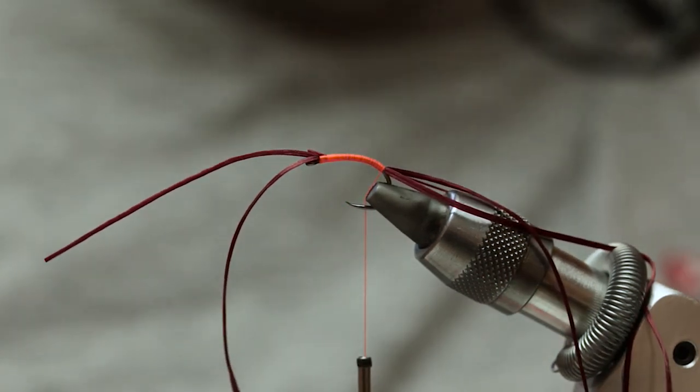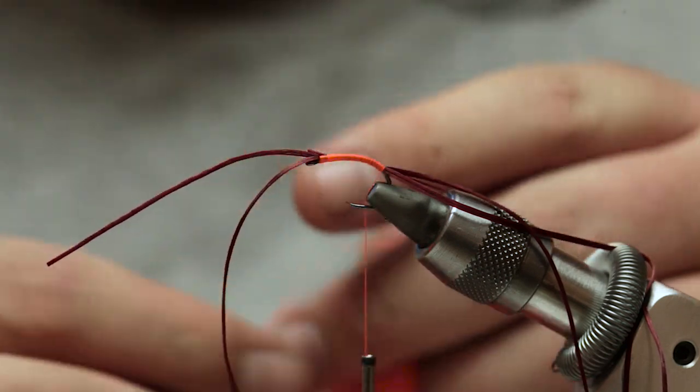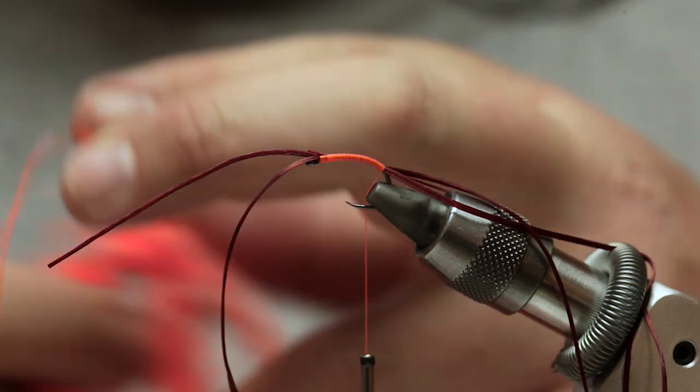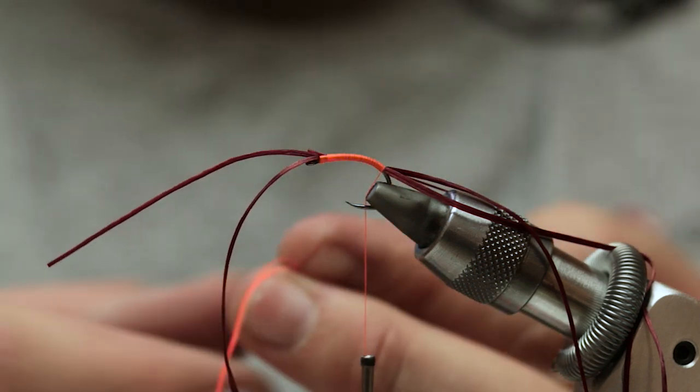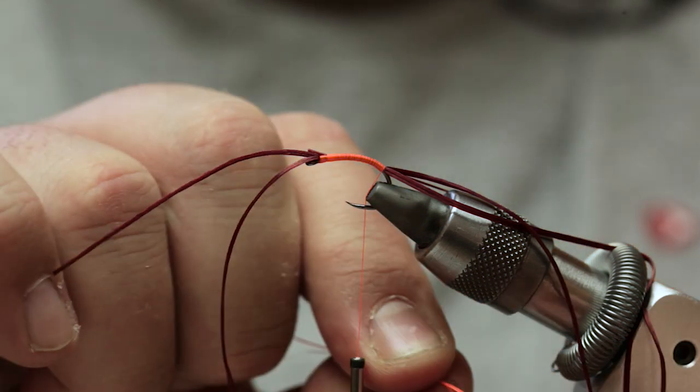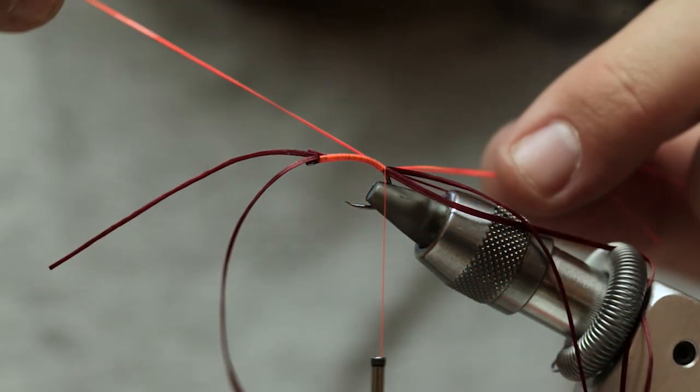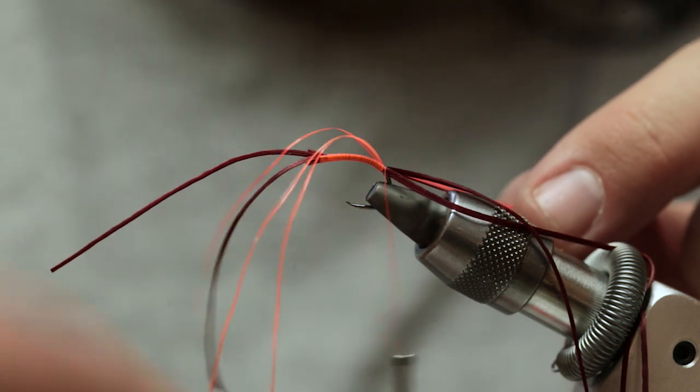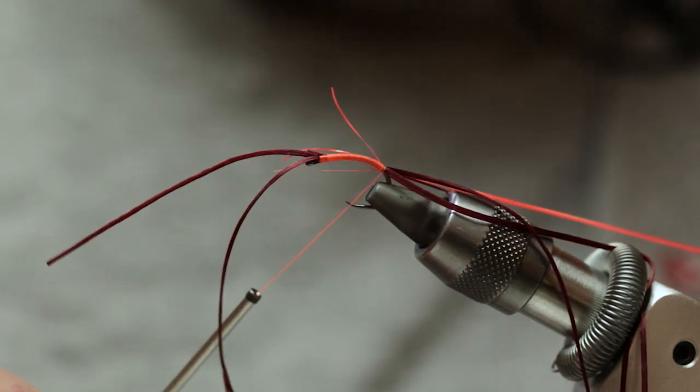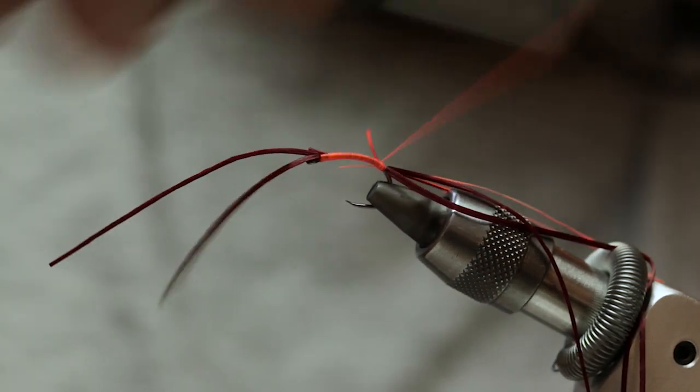And then what you want to do is get your body material there. It's a neon flash. Give yourself a couple of strands. And then take it under the thread and roll it around to yourself. Make sure it's straight. Pull it down to where you're going to catch it in.